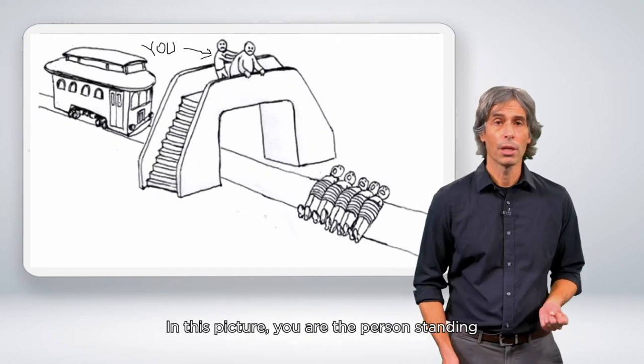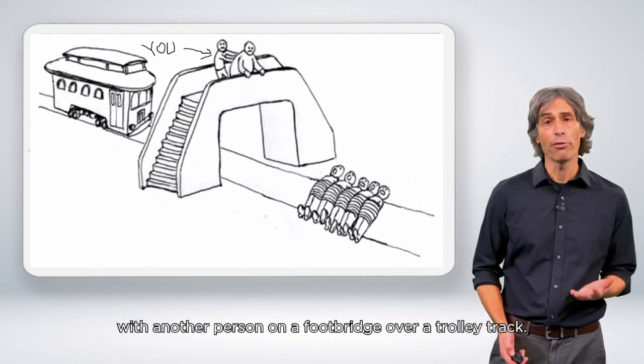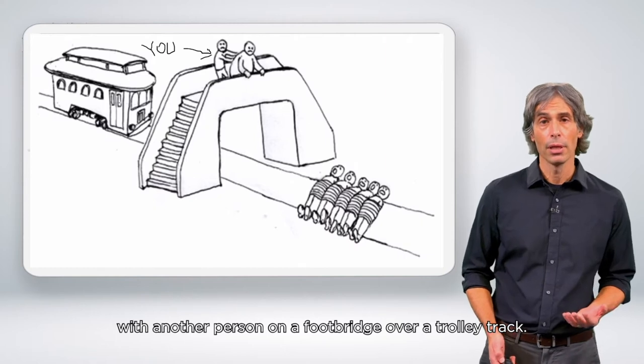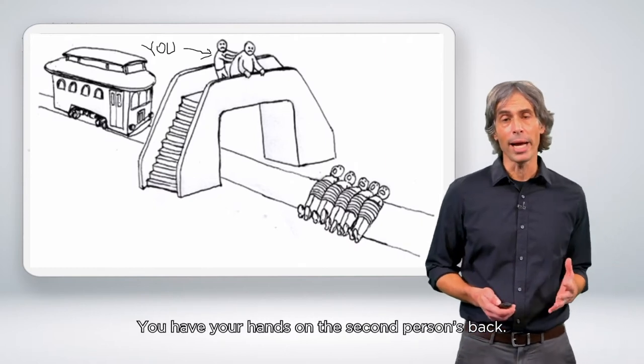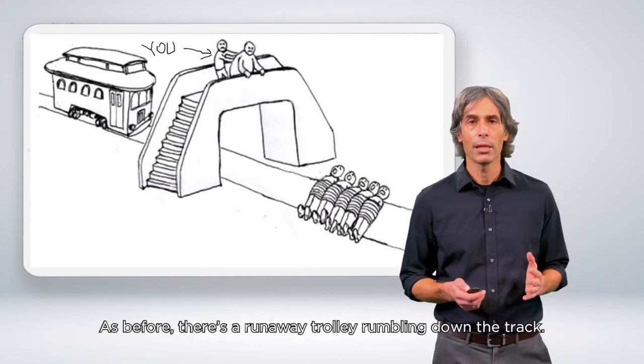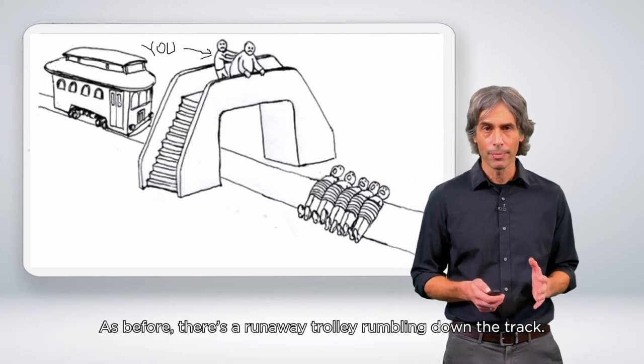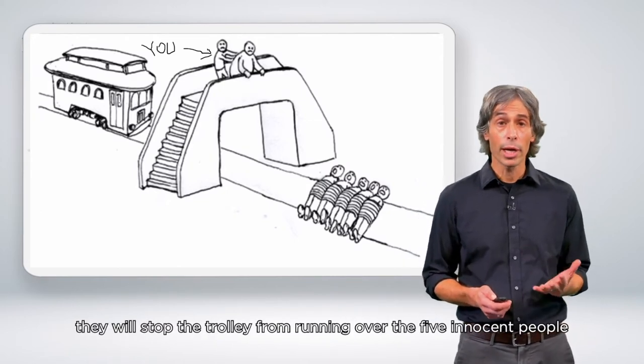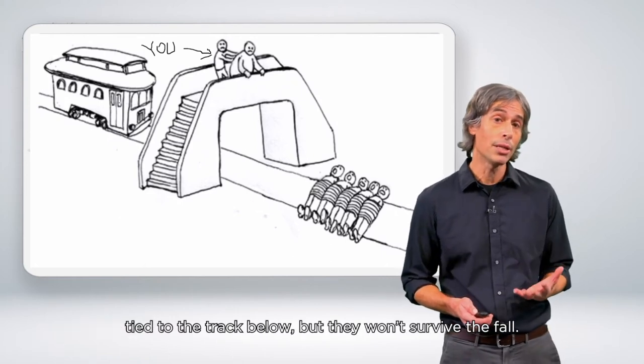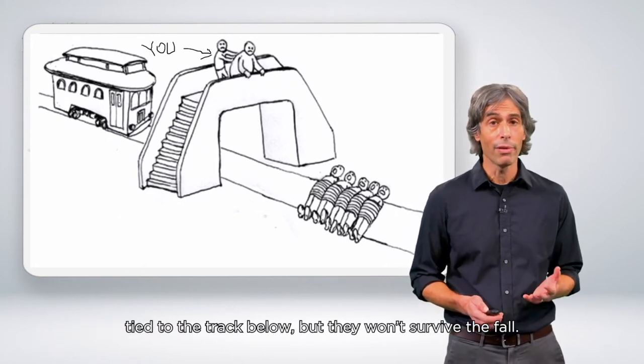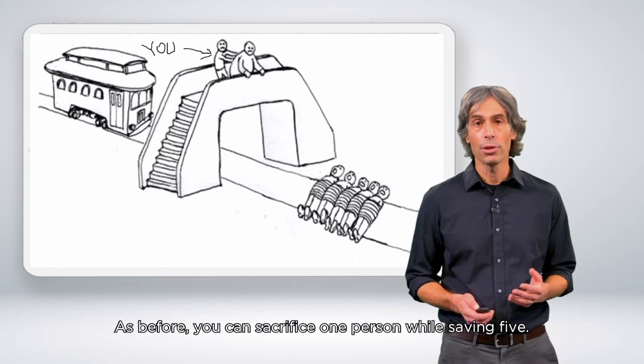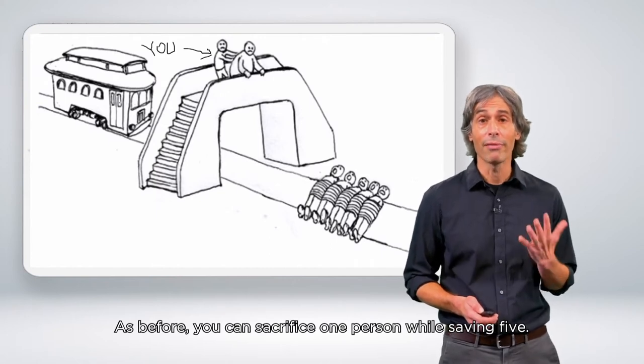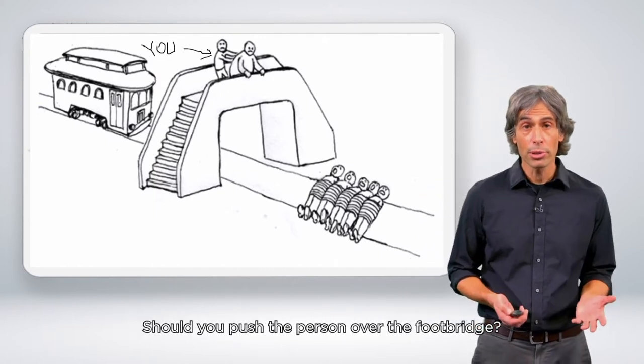In this picture, you are the person standing with another person on a footbridge over a trolley track. You have your hands on the second person's back. As before, there's a runaway trolley rumbling down the track. If you push this innocent person over the footbridge, they will stop the trolley from running over the five innocent people tied to the track below, but they won't survive the fall. As before, you can sacrifice one person while saving five. Should you push the person over the footbridge?